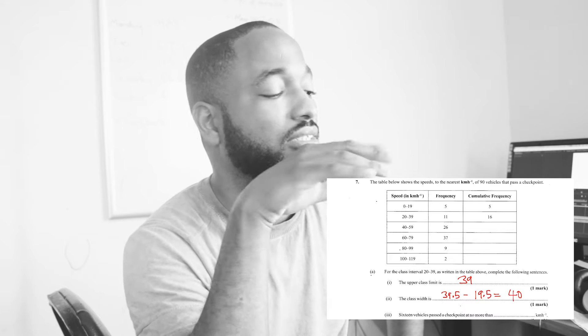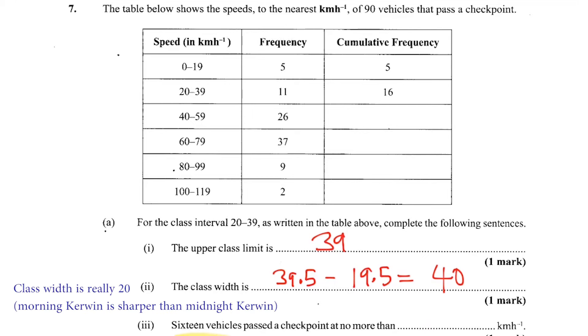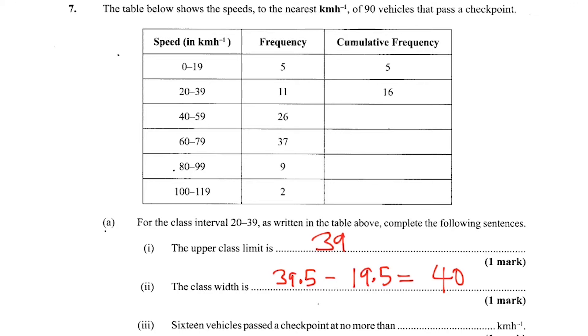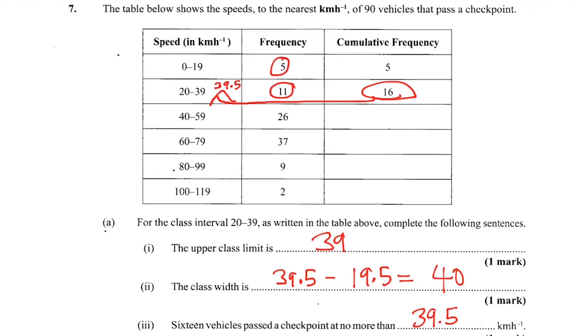Part 3: 16 vehicles pass the checkpoint at no more than... So this is the boundary we're talking about. 16, by the way, is 5 plus 11. We reach 16 in this frequency. At no more than the boundary, which is not 39 but 39.5 - we could use values all the way up to just before 39.5. So the answer they are looking for is 39.5. If you want to be technical, 'no more than 39.5' could include 39.5, but that value actually belongs to the next class.